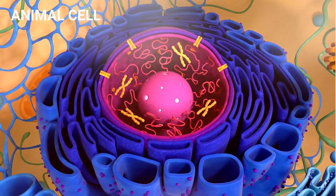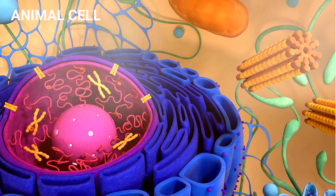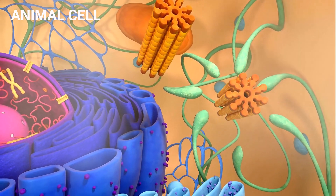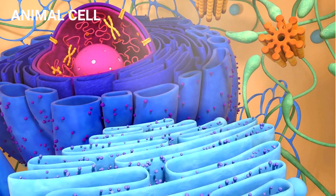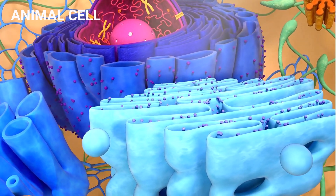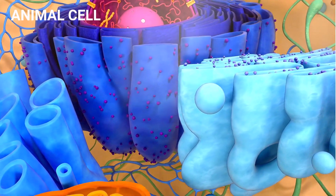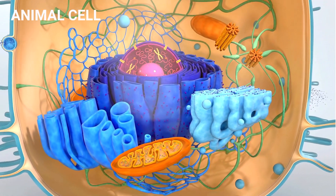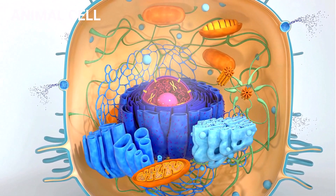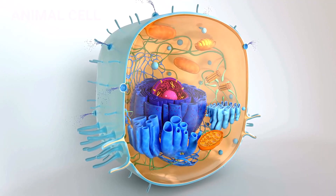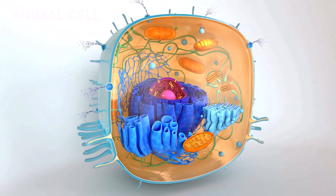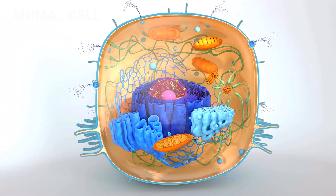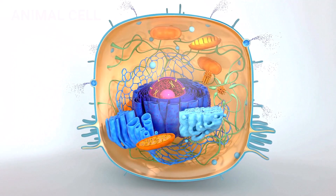Animal cells are eukaryotic cells which include cell organelles like cytoplasm, cell membrane (also known as plasma membrane), nucleus, endoplasmic reticulum (both rough and smooth), mitochondria, ribosomes, Golgi apparatus, and vacuoles.